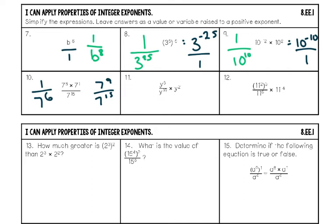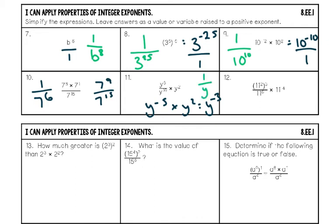Number eleven, done a different way: y to the fifth over y to the tenth — same base being divided, so subtract the exponents. Five minus ten gives y to the negative fifth power. Bring down times y squared — same base being multiplied, add the exponents. You get y to the negative third power. Since y is not happy, move it downstairs and make the exponent positive. Final answer: one over y cubed.